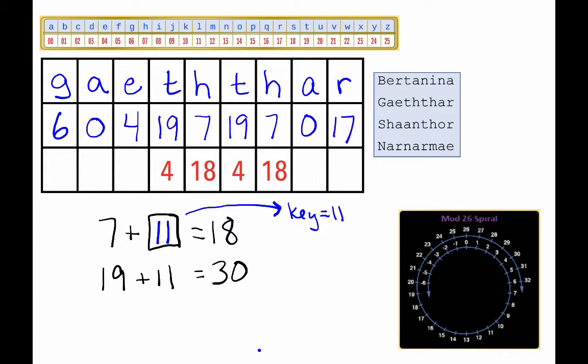But the encryption has to be numbered between 0 and 25, just like in the table. What happens in cryptography is that once we get past 25, we just start over again at 0.